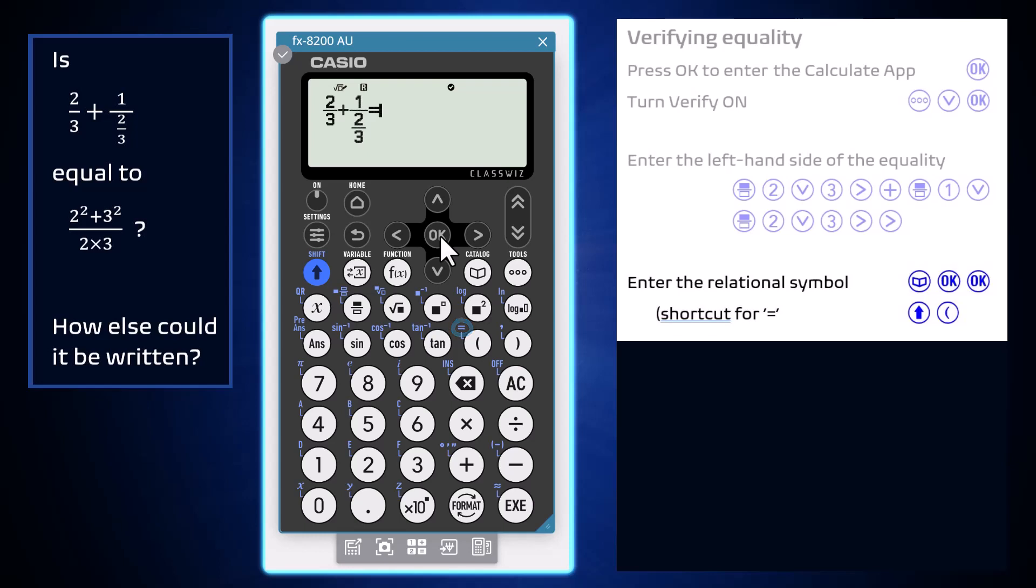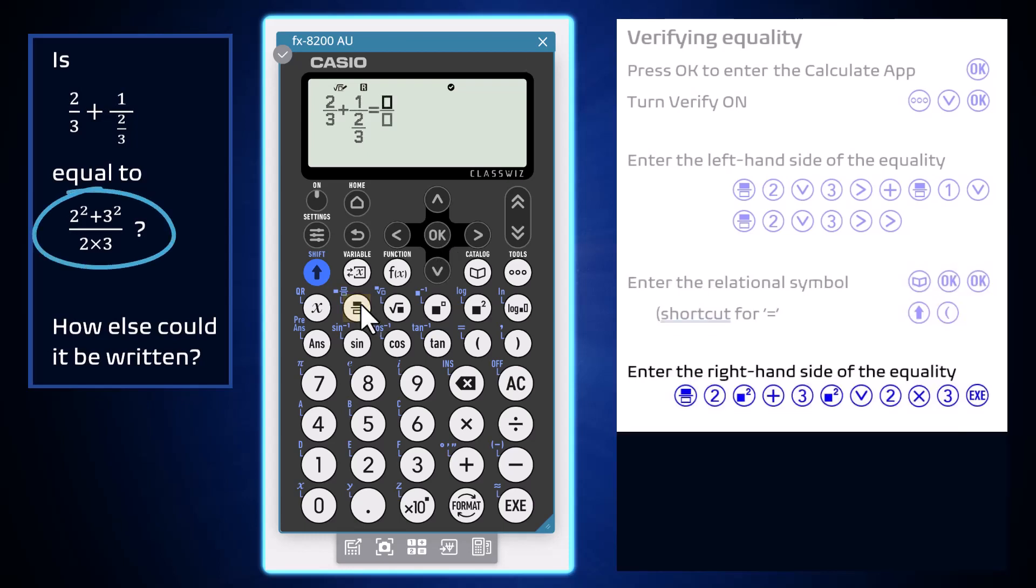Now for the right-hand side of the equality. Upon pressing execute, we see that the equation we entered is true. If it were not, false would be displayed.